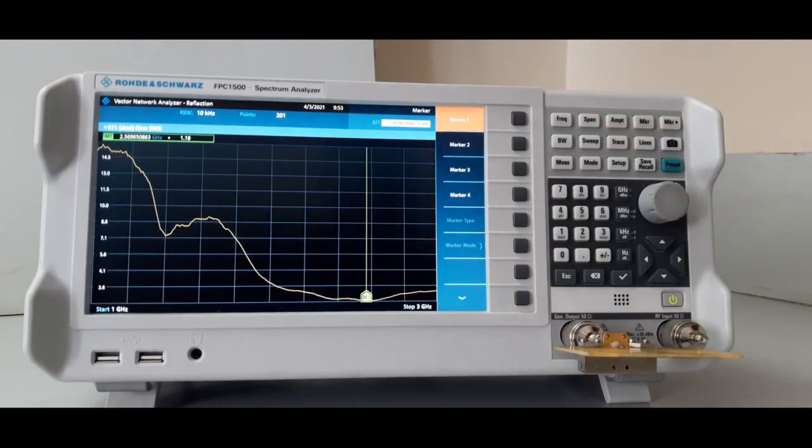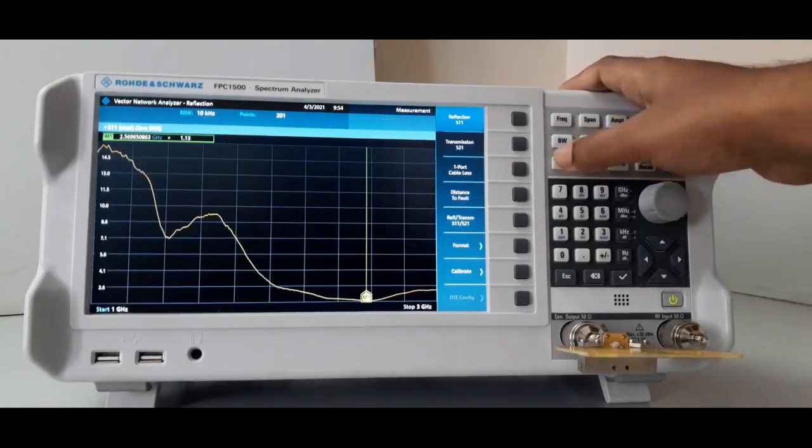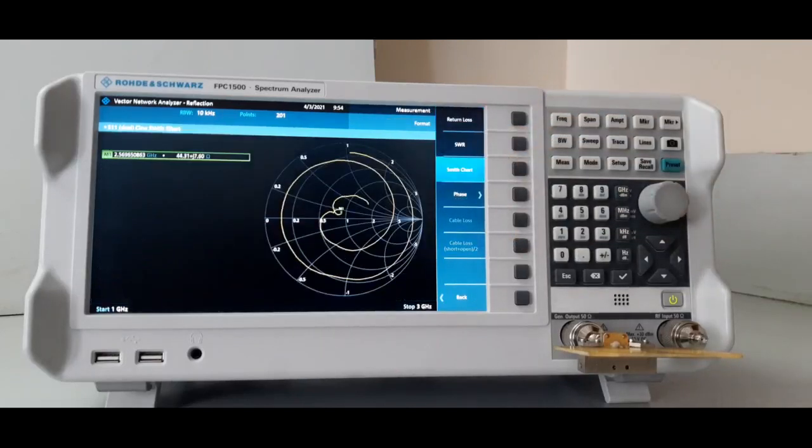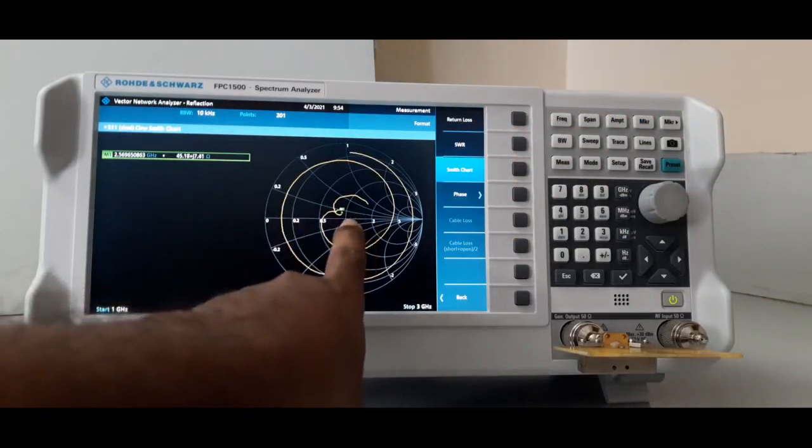Then you will check impedance in Smith chart. Go to measurement, format Smith chart. So this is for 1 to 3 gigahertz. Where some, this is a 1, center.